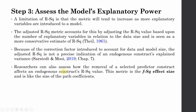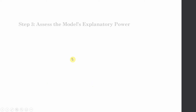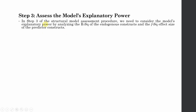So what's the solution? In this case, researchers are asked to assess the F-square effect size, which is like the size of the path coefficients. In step 3 of the structural model assessment procedure, we need to consider the model's explanatory power by analyzing the R-square of endogenous constructs and the F-square effect size of predictor constructs.